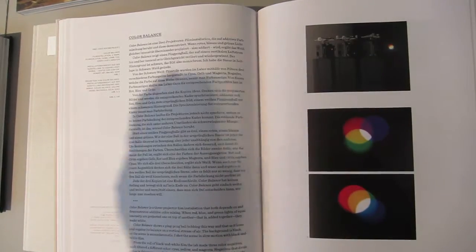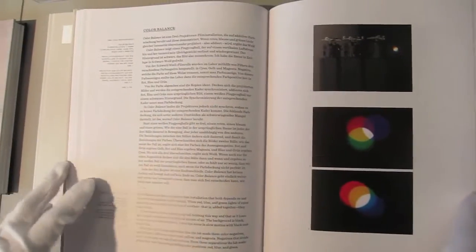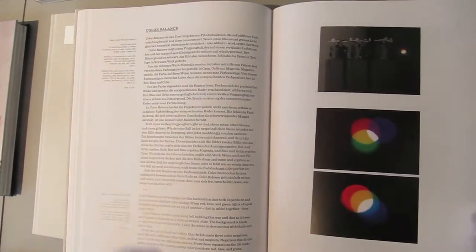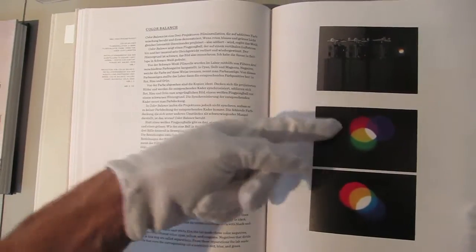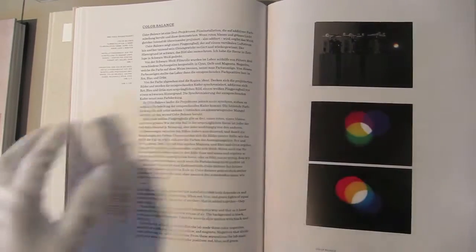So actually he was filming a white ball, a white ping pong ball over a kind of air, dancing in the air and then coloring this film in three colors and doing three projections and overlaying it. And so there was then this very poetic piece called Color Balance.